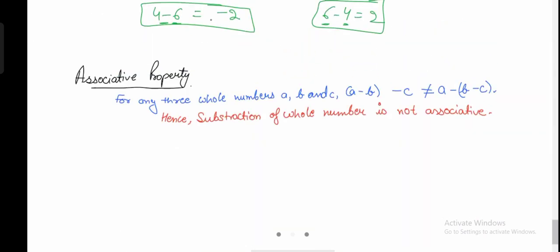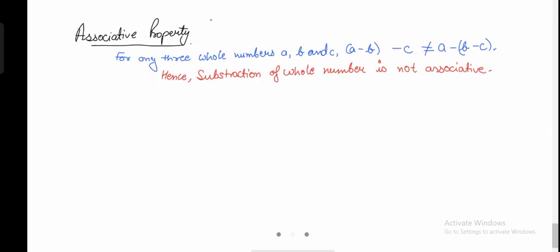Let's move to the associative property. For any three whole numbers, let's consider A, B, and C — whereas before we only considered two numbers. Let's say A is 5, B is 4, and C is 3. In this scenario, we have to do A minus B minus C.